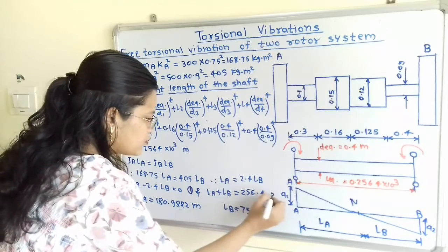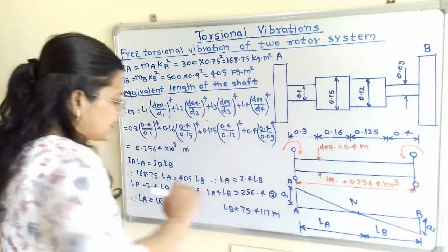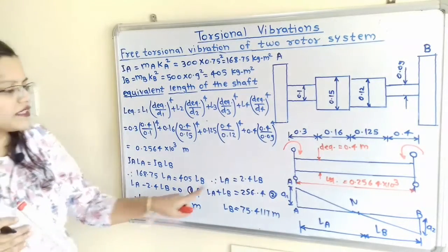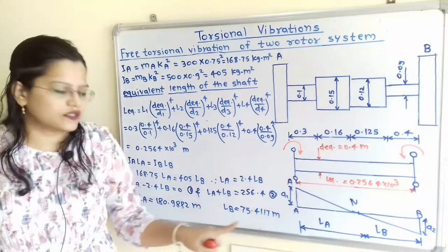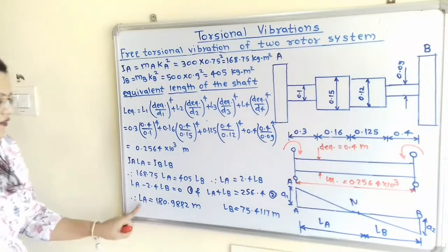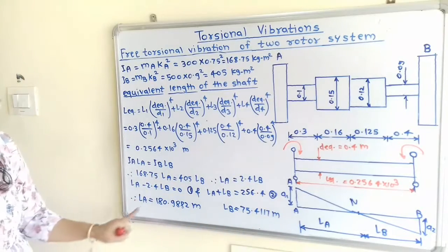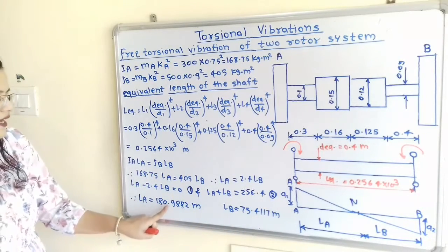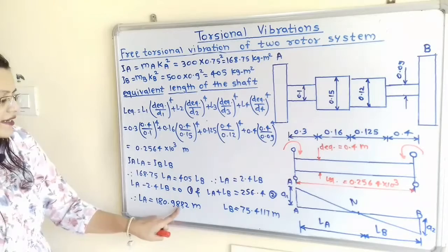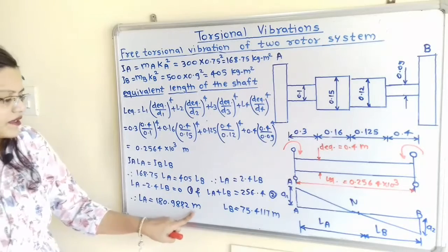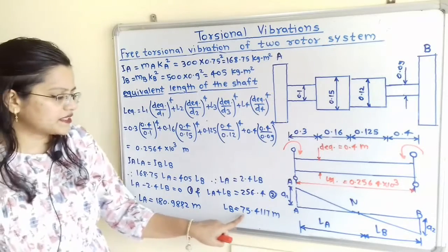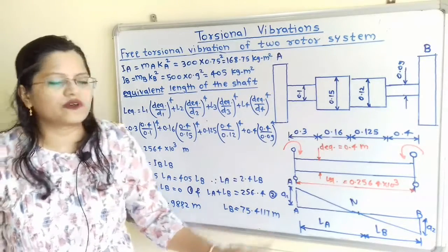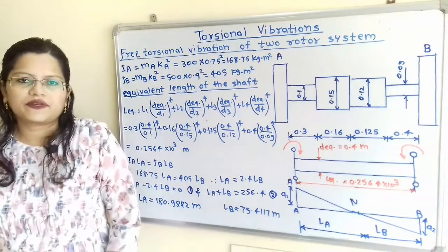When we solve these two equations, we get LA = 180.9882 m and LB = 75.4117 m.